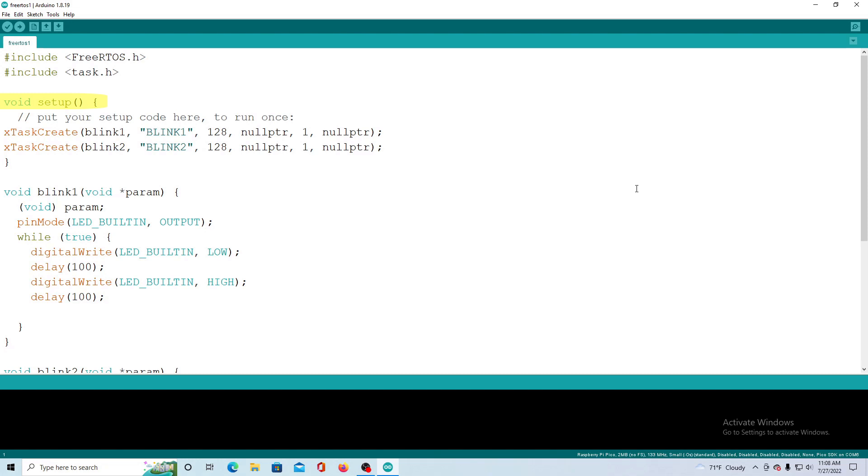Next we come to Setup where we create our two tasks using XTaskCreate. XTaskCreate turns functions into tasks. XTaskCreate takes the name of the function, the name of the task which is used for debugging, the size of the task depth in words, a pointer to the task parameters, a task priority, and an optional handle to the created task as arguments.